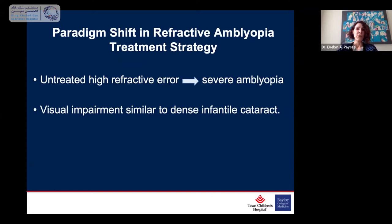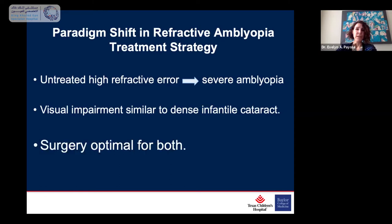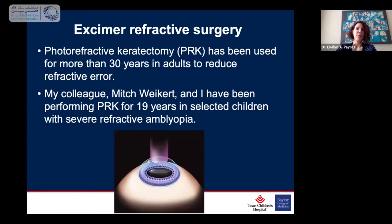But now there is this treatment option of reducing refractive error through laser. I'd like you to think of these children differently than routine garden-variety amblyopia. Severe high refractive error that is untreated will result in severe amblyopia — unlike the amblyopia you get with a dense infantile cataract. It's a type of amblyopia that should be treated more aggressively than routine mild-to-moderate amblyopes. Excimer laser surgery has been around for over 30 years in adults to reduce refractive error.